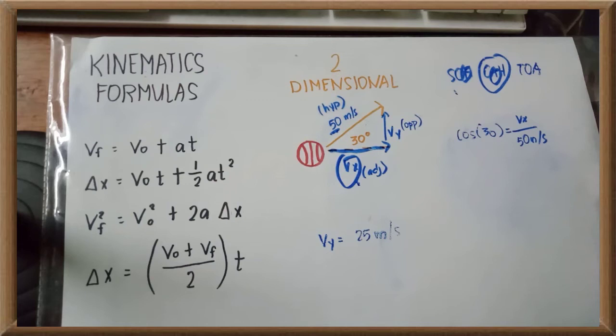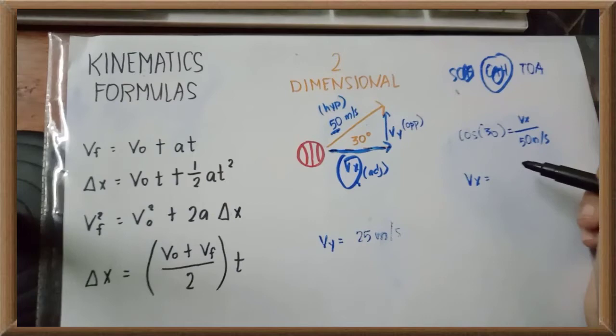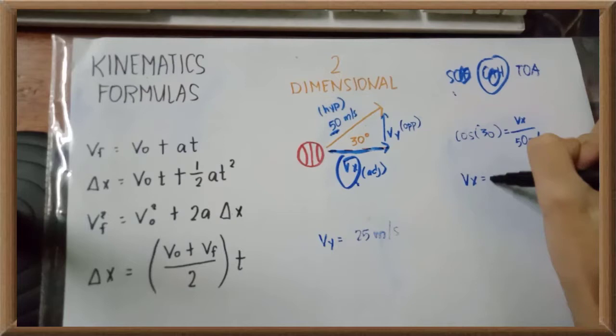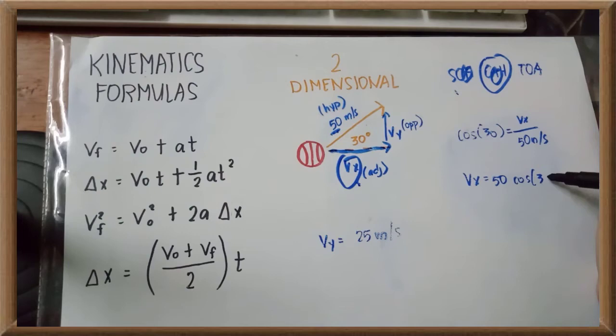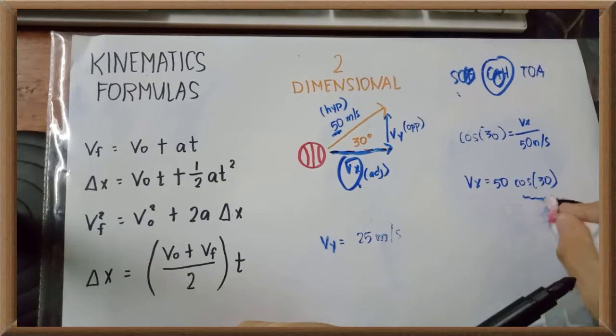Okay, ngayon isulat naman natin muli ito in terms of our horizontal velocity. We know that Vx is going to be equal to 50 times the cosine of 30 degrees. And we know that the cosine of 30 degrees is equal to square root of 3 over 2. So, ang ating horizontal velocity Vx is equal to 50 times the square root of 3 over 2.